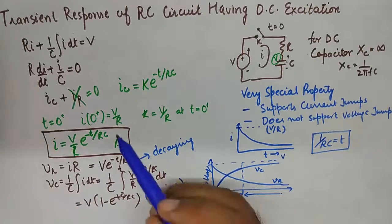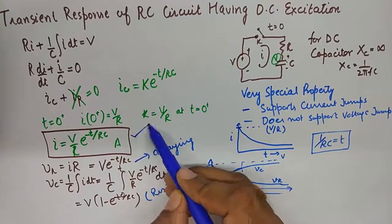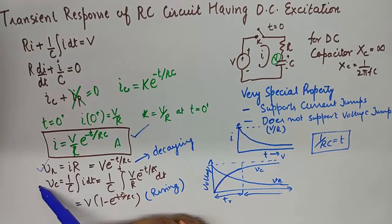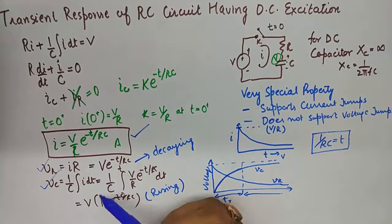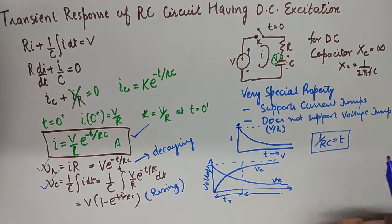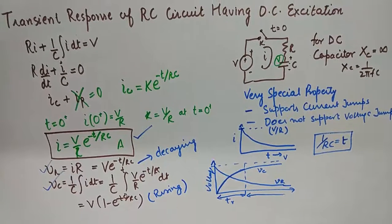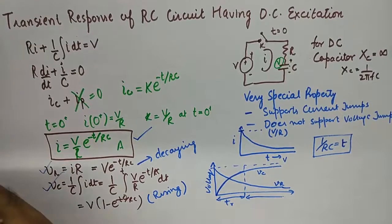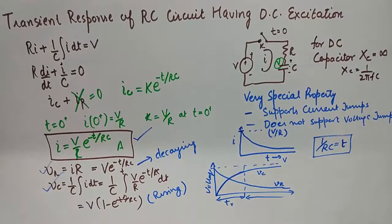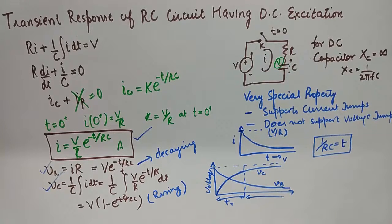So very few things to remember. The value of the instantaneous current. The value of voltage across resistance. And the value of voltage across capacitor at any instant of time. And finally the time constant. And with these set of things you will be able to do any numerical with ease. And a little bit of understanding makes it further easier. And I hope this tutorial was helpful.